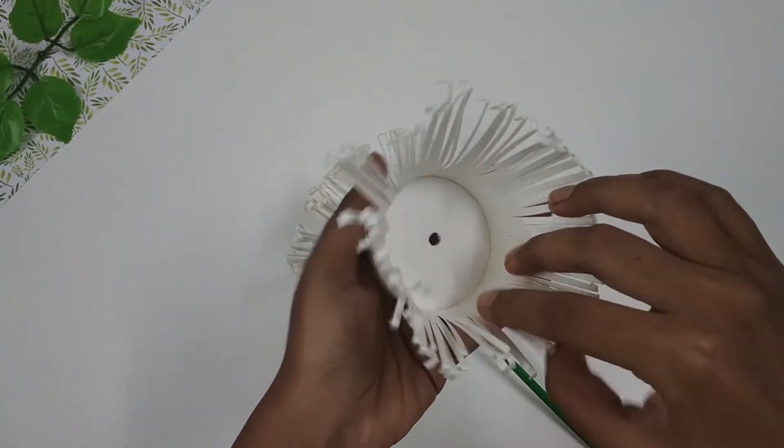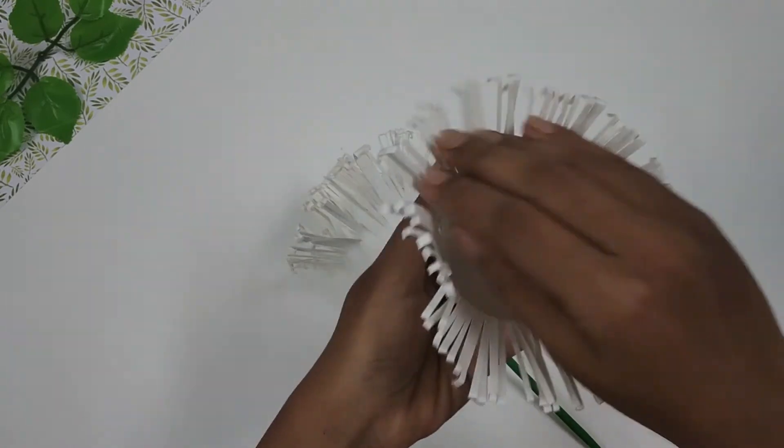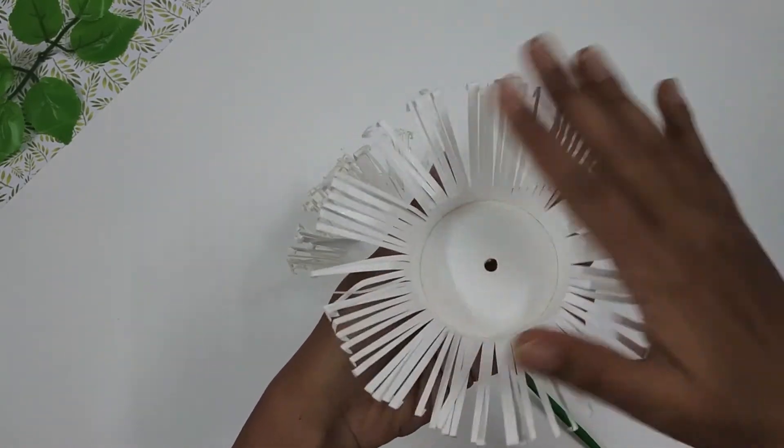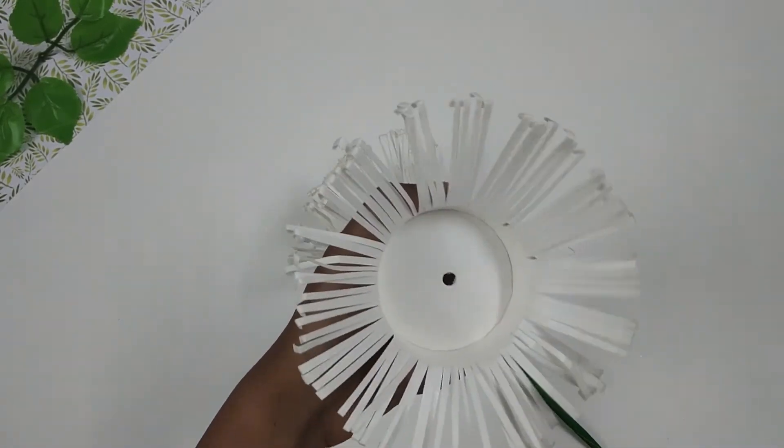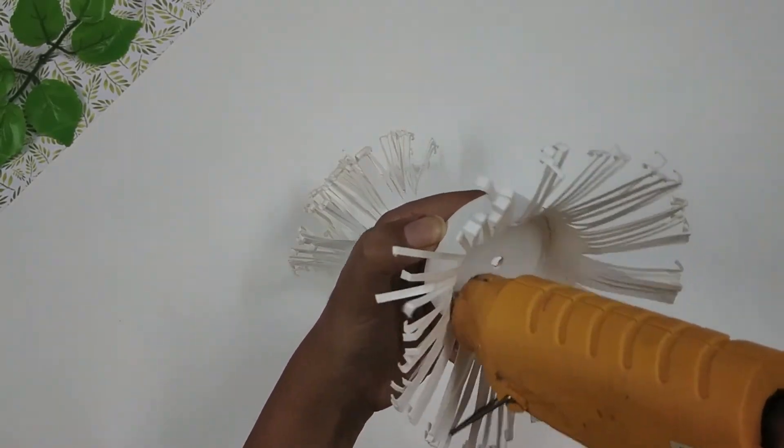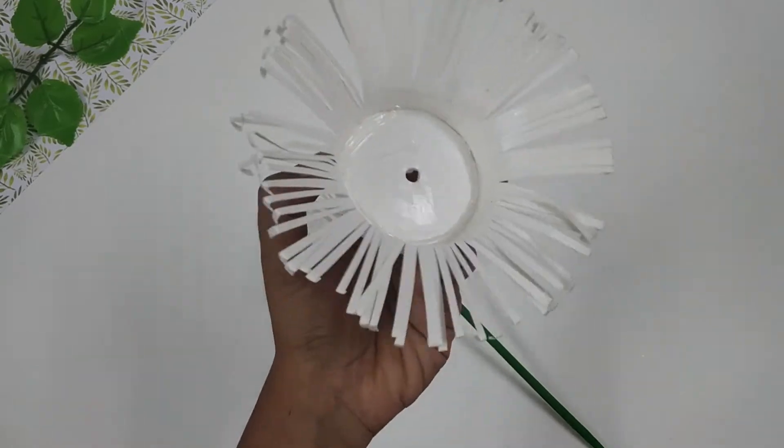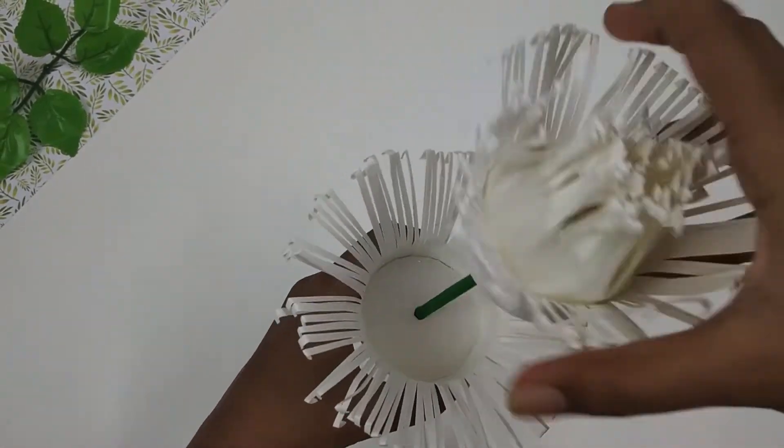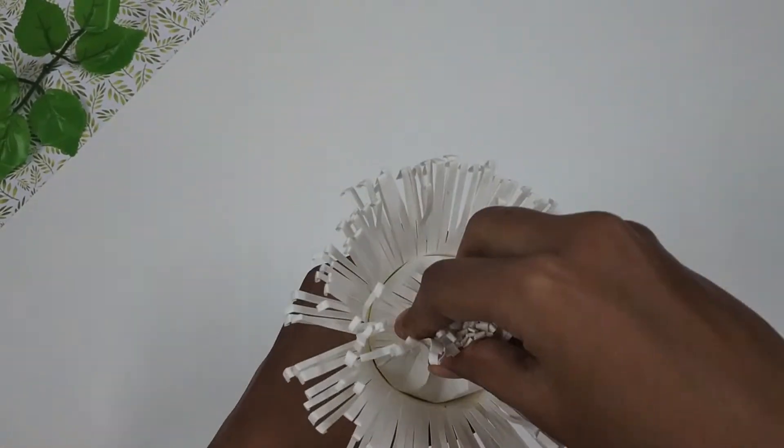Now I'll take my third cup and spread the cutting outwards like this. Next, I'll apply some hot glue on the inside and I'm going to attach it below the second cup.